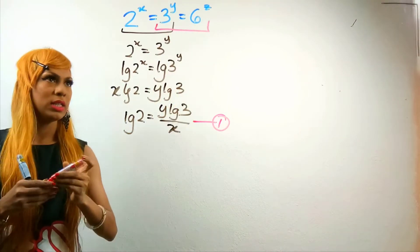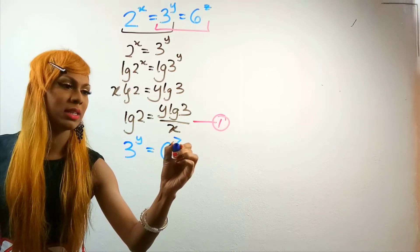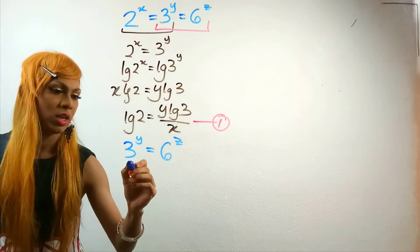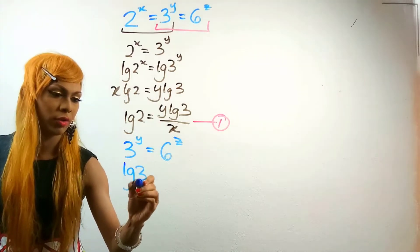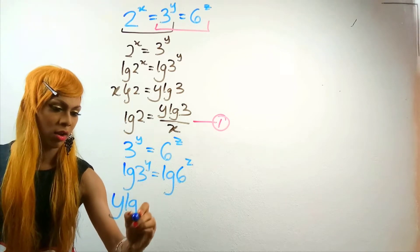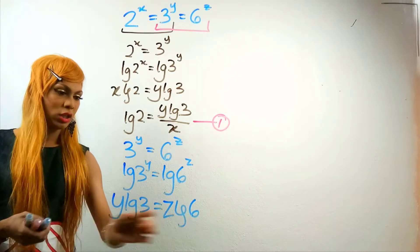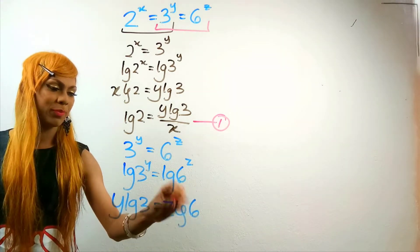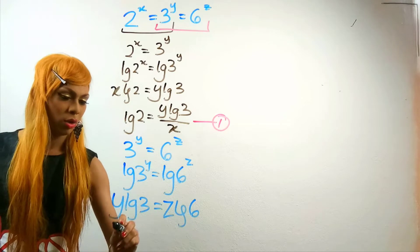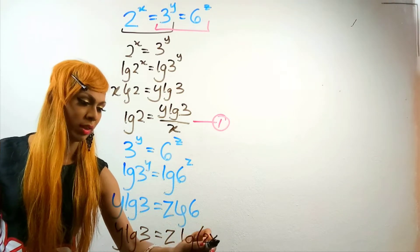Now let's focus on part two. I say 3^y is equivalent to 6^z. Then I log both sides: log 3^y equivalent to log 6^z, which becomes y·log 3 equivalent to z·log 6. This 6 we can break down to 2 times 3, so it becomes y·log 3 equivalent to z·log(2 × 3).